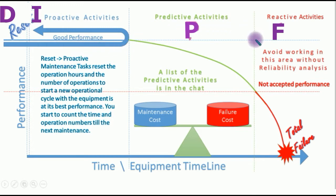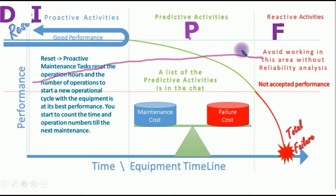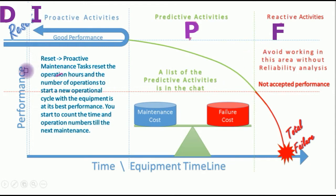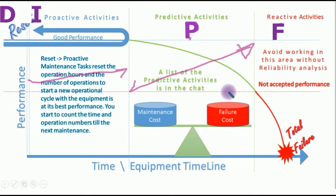There is a potential to work during the green region where you can apply some predictive analysis. But if you don't apply any predictive analysis and just work on operation hours or operation times, you might be working all over this area — not only in this region, but also extending further, then starting to change the part, and so on. Because you don't have any predictive measurements to guide you, you are working only time-paced or counter-paced.